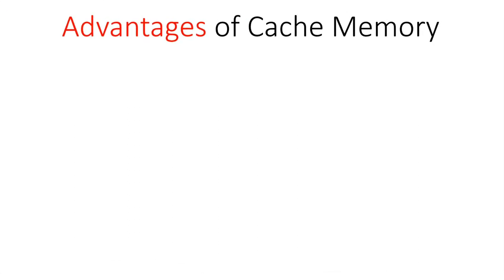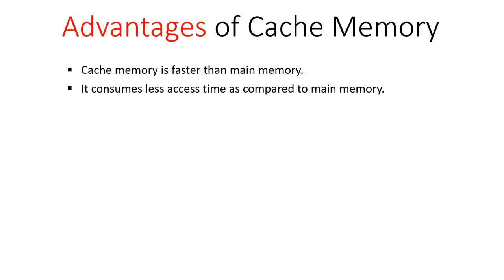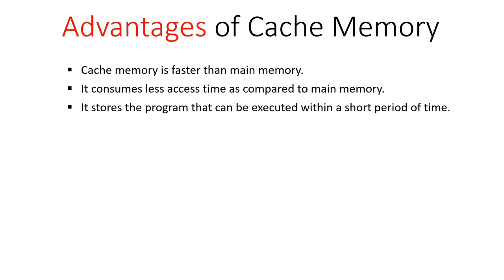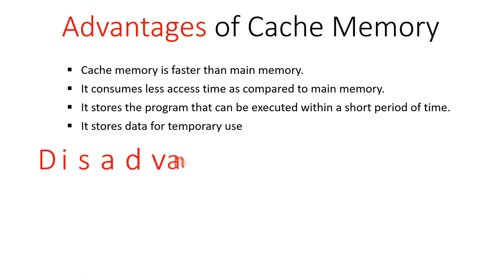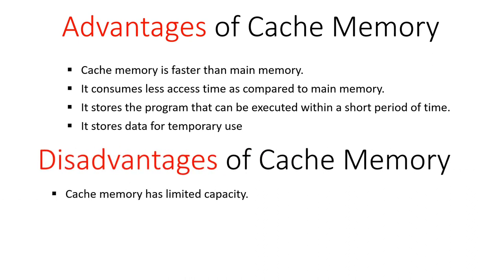The advantages of cache memory include: it is the fastest memory of a computer system, it consumes less time compared to main memory, and it stores programs that can be executed within a short period of time. It also stores data for temporary use, making it a temporary type of memory. Its disadvantages include limited capacity — it cannot store large amounts of data — and it is an expensive type of memory.